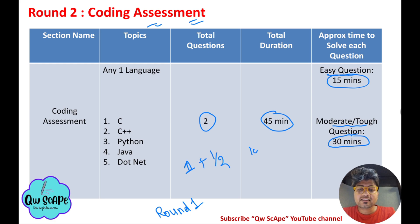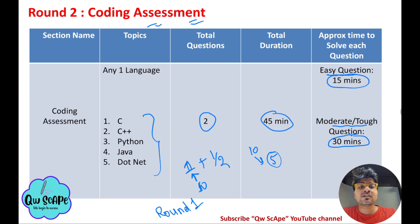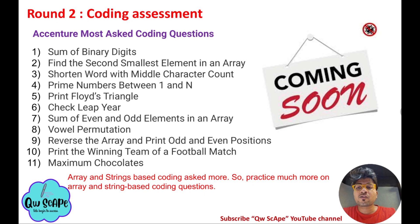Aim to solve the easy coding question fully — all test cases passed. For the harder question, try to pass at least half the test cases, e.g., 5 out of 10. This improves your chances of being shortlisted for the next round. You can use any language you're comfortable with: C, C++, Python, Java, or .NET.